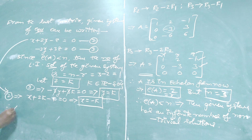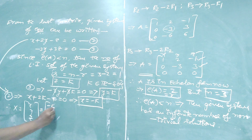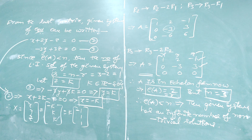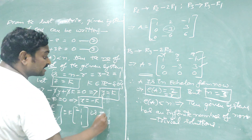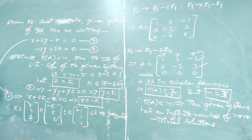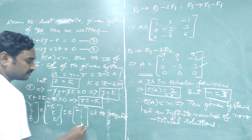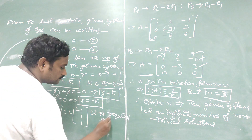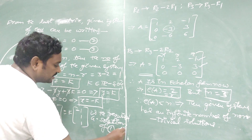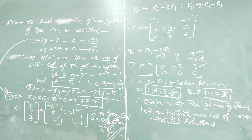Finally, the solution vector X = [x, y, z] = [minus k, k, k] = k times [minus 1, 1, 1]. This is the required general solution, because k is a parameter — it may be 1, 2, or anything. Giving different values to k gives different solutions for x, y, z. This is the complete general solution of the given system.